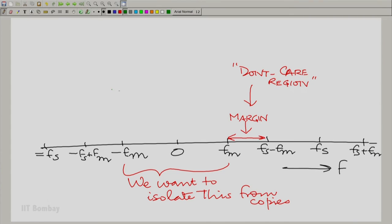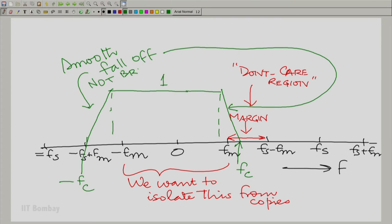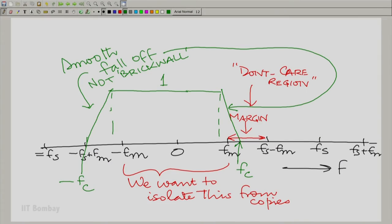We can make that response not a brick wall. For example, we could have a response that is 1 all the way up to f_m and then falls off smoothly up to some f_c, and minus f_c on the other side — not a brick wall. Notice the big difference: this green response is a continuous function, a continuous frequency response, as opposed to the brick-wall response which is discontinuous at f_c and minus f_c.